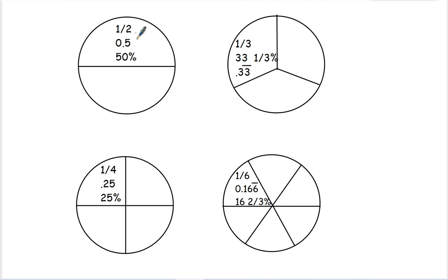One half is the same as 0.5 as a decimal and 50%. One third of a circle is the same as 33 and one third percent and 0.33. This line up here tells us that that 3 keeps going on and on and on. This is a decimal that doesn't end.